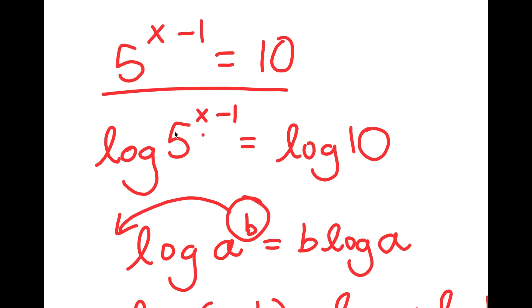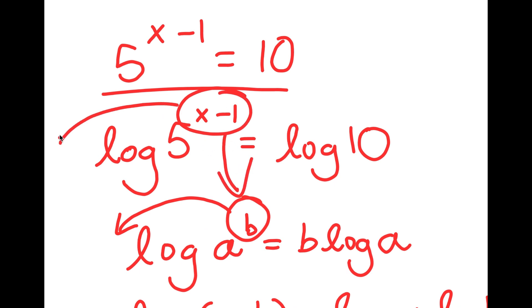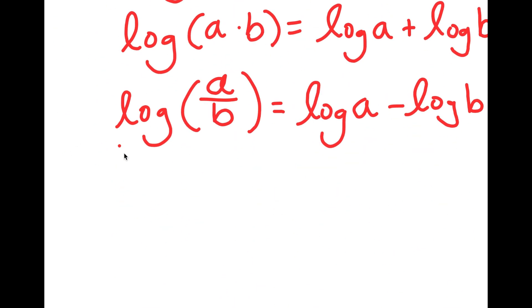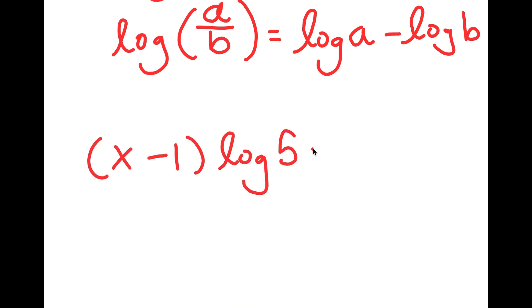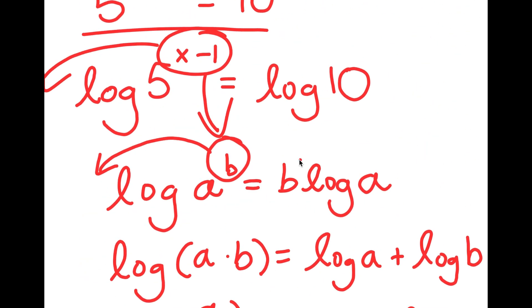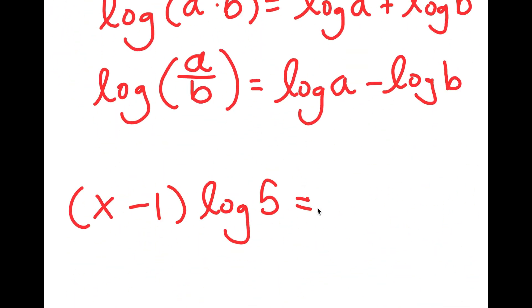So in this case, I have log 5 to the power of x minus 1, and I can think of x minus 1 as b. So if I move this over, I get x minus 1 times log 5 is equal to log 10.